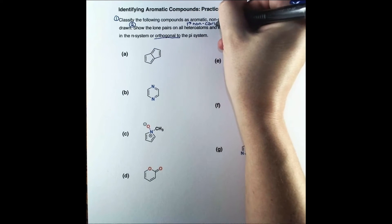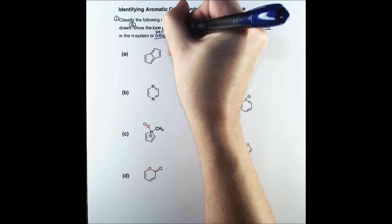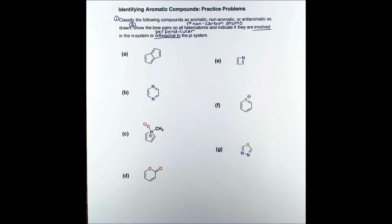A heteroatom is a non-carbon atom, and orthogonal means the lone pair is perpendicular to the pi system. This is important because it cannot participate in the pi system when orthogonal. Maybe pause the video here and try to classify these compounds on your own. When you resume, we can solve the problems together.